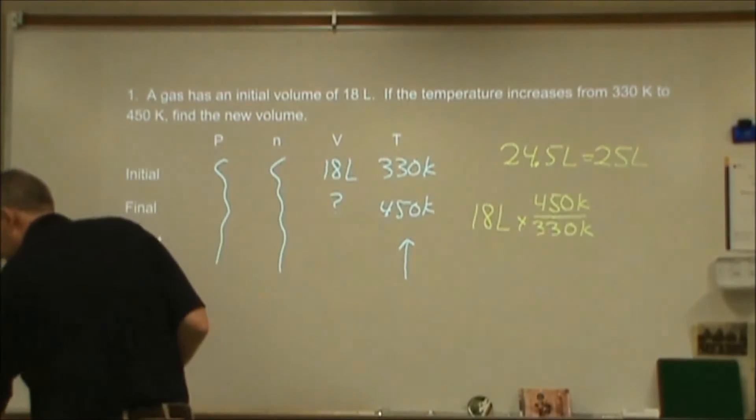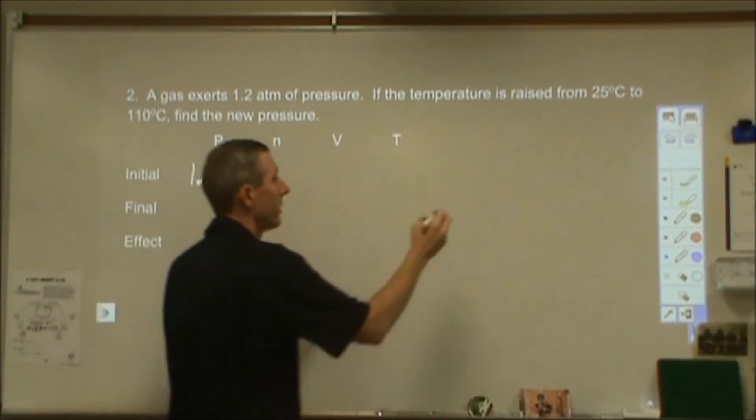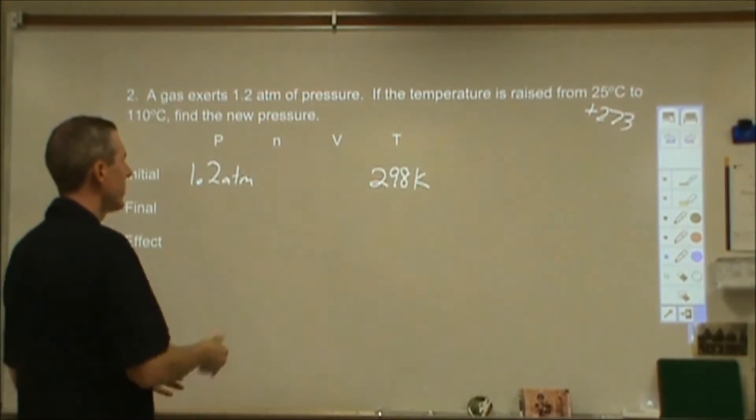Let's look at another example. So here I have the gas pressure initially of 1.2 atmospheres. Temperature goes from 25 degrees. Now 25 degrees is not directly proportional. It's a degree Celsius. I need that in Kelvin. So I'm going to add 273 to that to make that 298. And then I can plug it into my chart. For the other units, it doesn't matter what they are as long as they're the same before and after. But that I need to be in Kelvin. 110 degrees, likewise, I need to add 273 to that before I can put that in my chart. That's going to be 383.